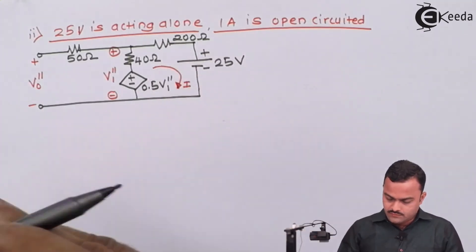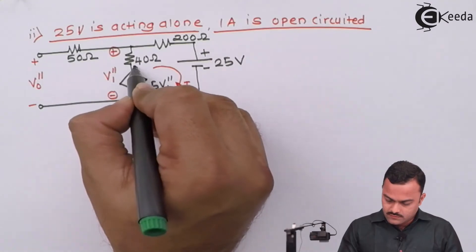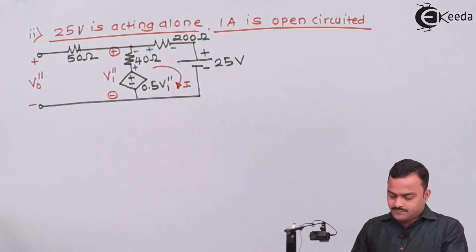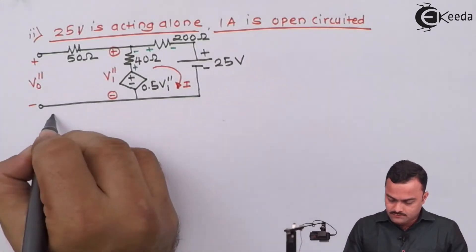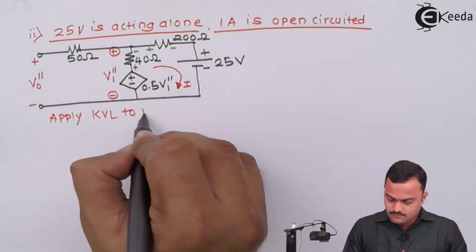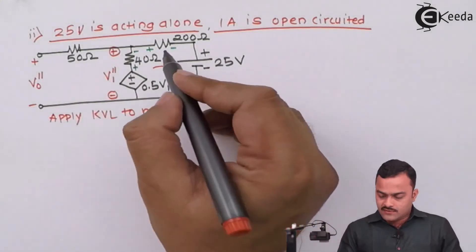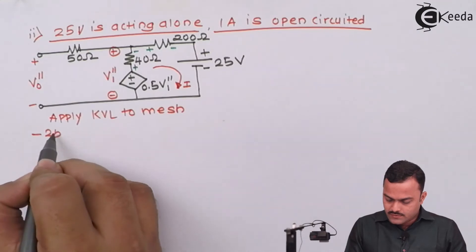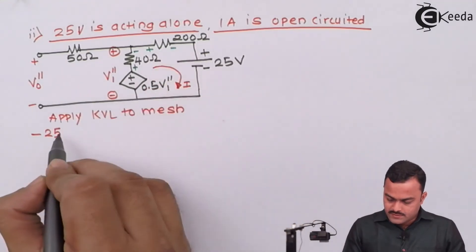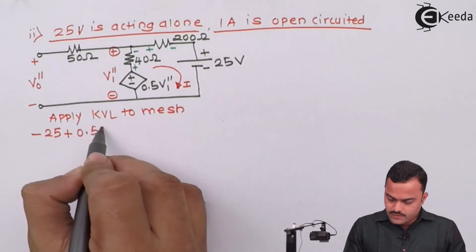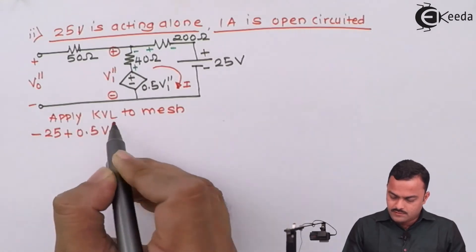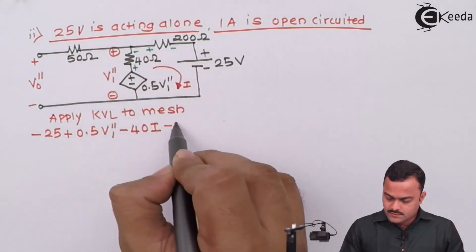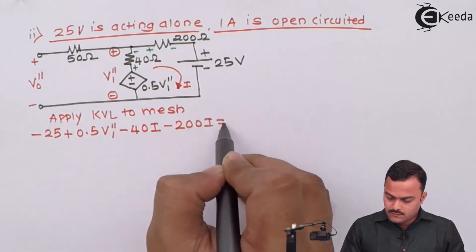It is quite simple here — there is only one mesh. Let's mark the current as I. This current produces the voltage across 40 ohm and 200 ohm. Applying KVL starting from the 25V source: minus 25 plus 0.5 V1'' minus 40 I minus 200 I = 0.